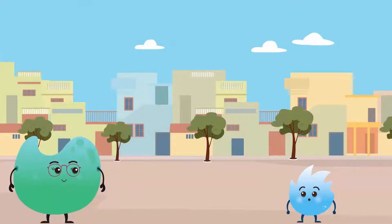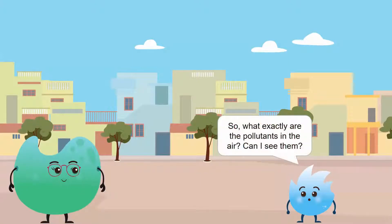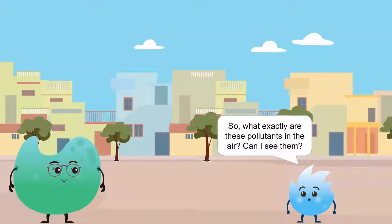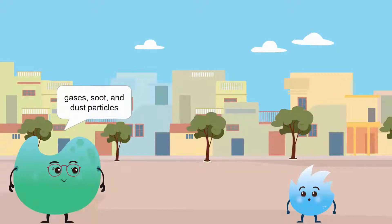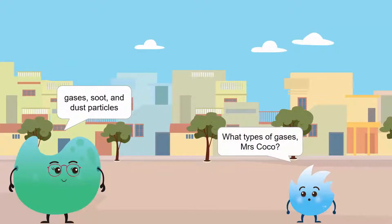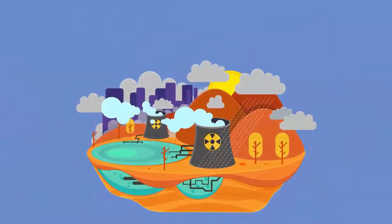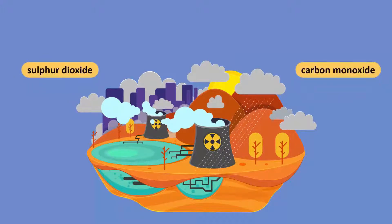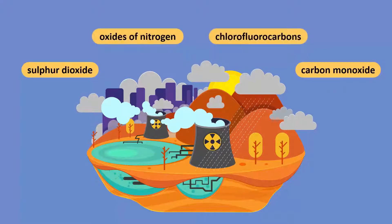So what exactly are these pollutants in the air? Can I see them? There are different types of air pollutants such as certain gases, soot, and dust particles. The harmful gases released into the air include sulfur dioxide, carbon monoxide, oxides of nitrogen, and chlorofluorocarbons.